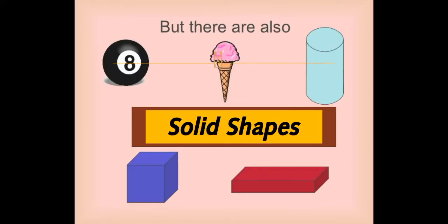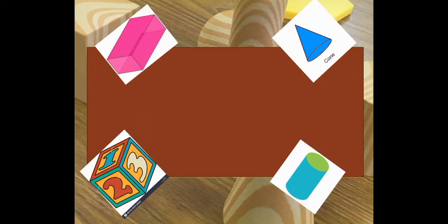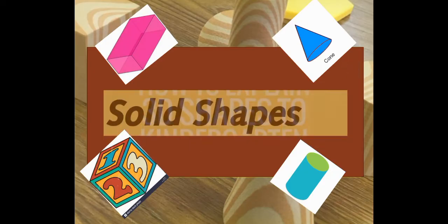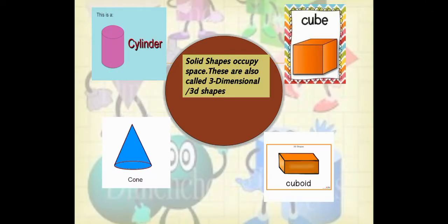But today we are going to learn about the solid shapes. Let's see what are the solid shapes. The solid shapes occupy space. These are also called 3D or 3-dimensional shapes.